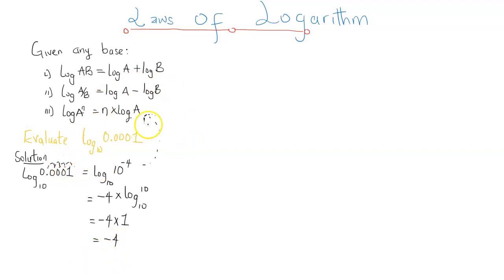The second way of doing this, evaluating log 0.0001 base 10, is by expressing this decimal as a fraction, and that's going to be log 1 over 10 raised to the power of 4, which is 10,000.